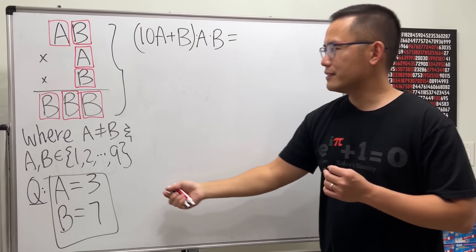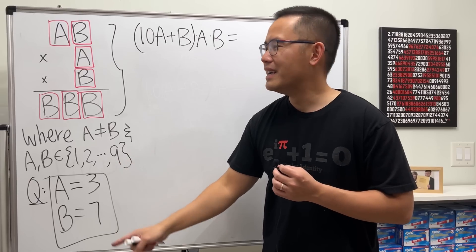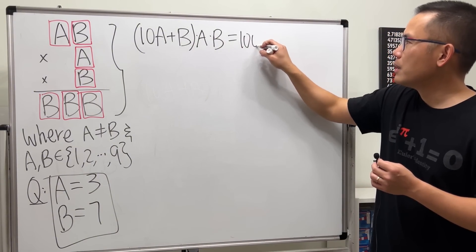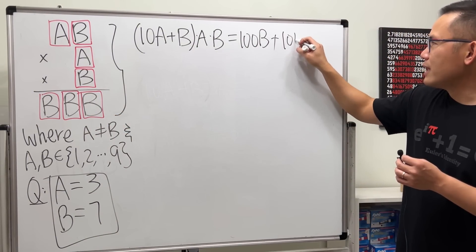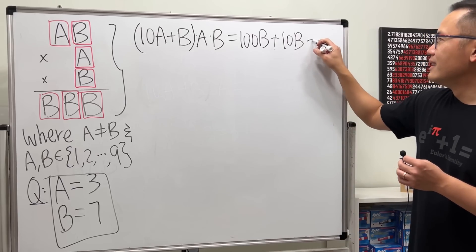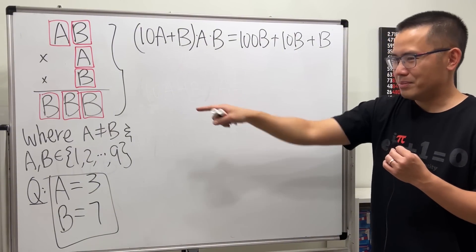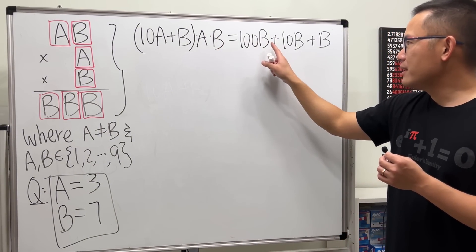And then we are going to take this, multiply by A and then multiply by B. And that will give us BBB. But do not write this as B to the third power because this B is in the one hundredth place which is 100B, this one is in the tenth place so 10B, and lastly the B in the unit place. So that's the BBB part.